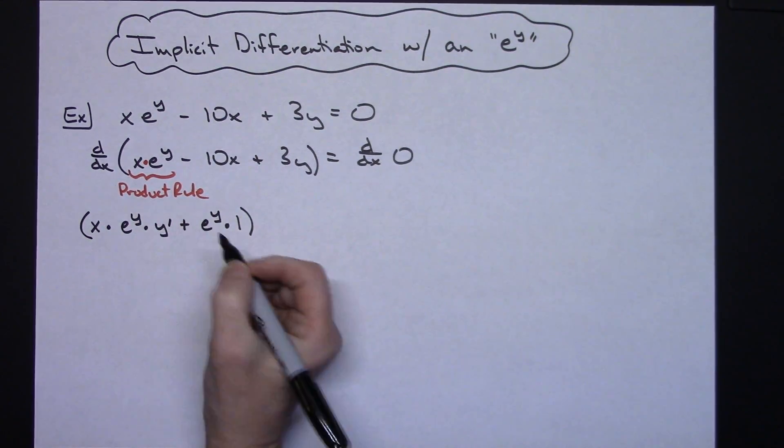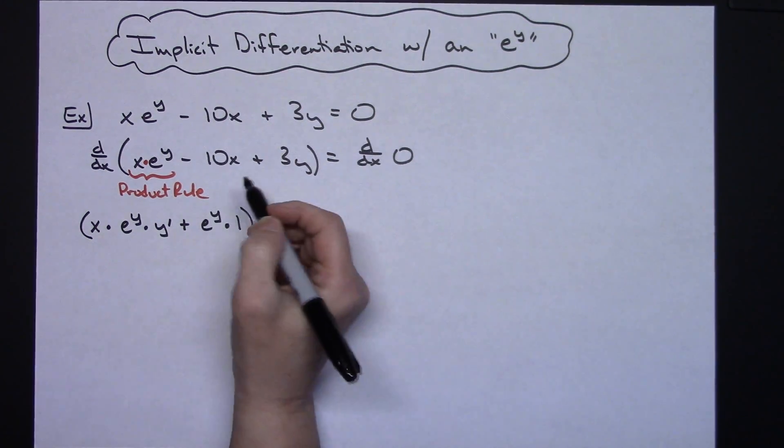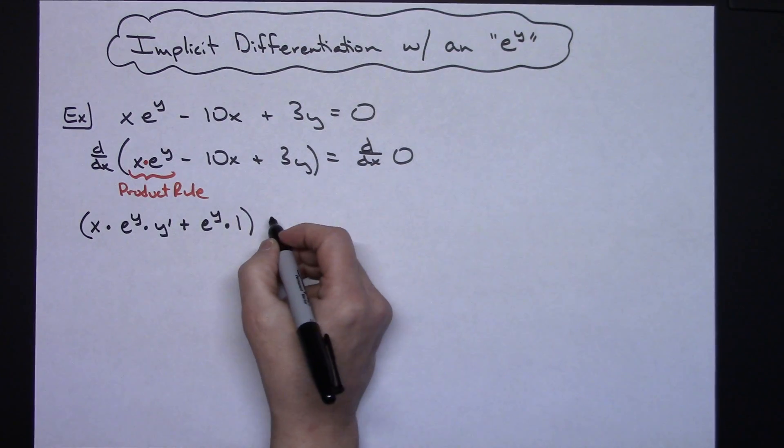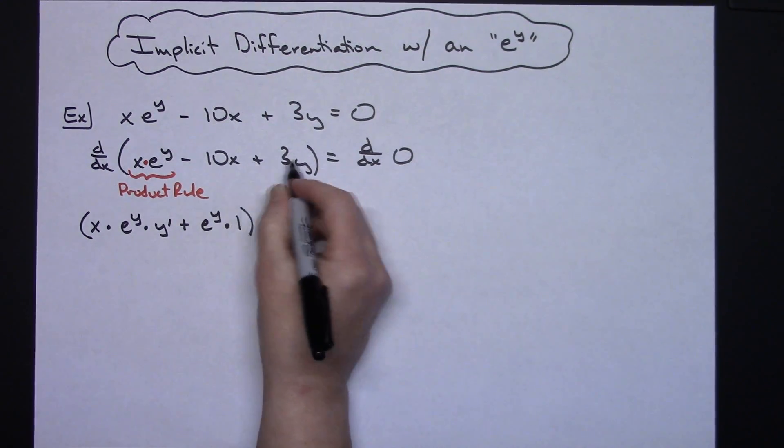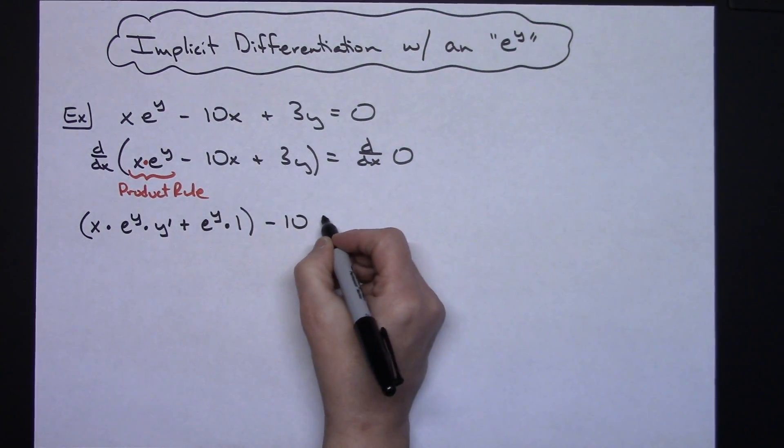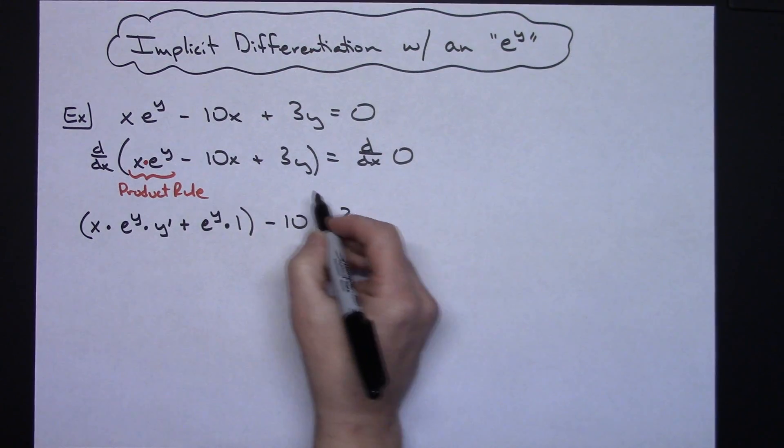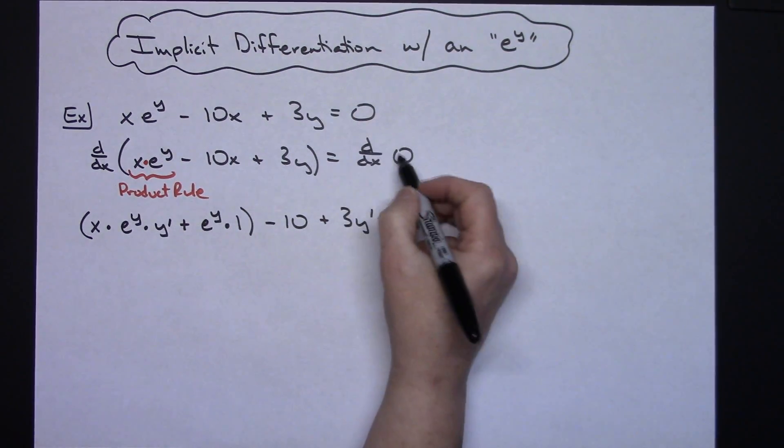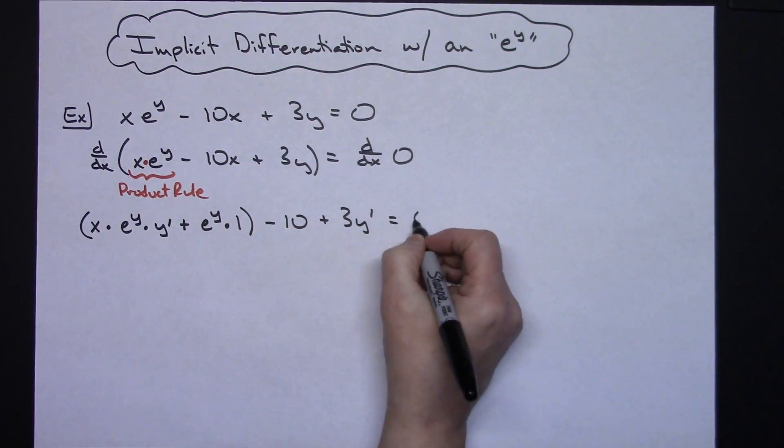Okay, here let's put that plus. Sorry, I don't know why I did a minus there. Then I've got a minus 10x. So when I take the derivative there, I'll have a minus 10, and then the derivative of that 3y is going to be a 3 for the derivative and then y prime. Derivative of 0 on that right-hand side is 0.